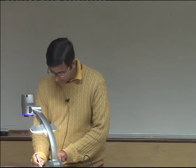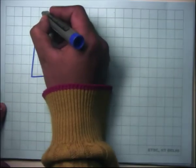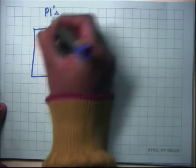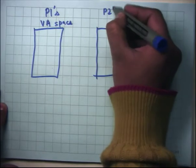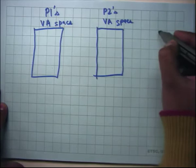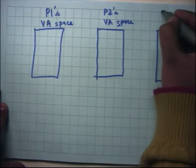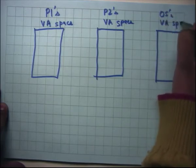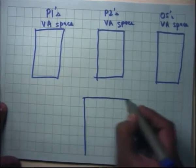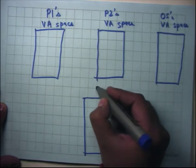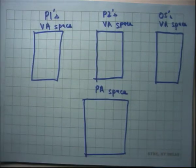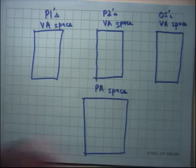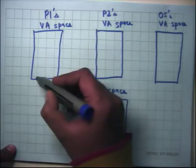If we just look at what segmentation is actually implementing: this is the virtual address space of process P1, this is P2's VA space, and this is the OS's VA space. This is the physical address space. We saw last time how the PA space is organized — there is BIOS, there are devices, and then there is actual physical memory inside the PA space.